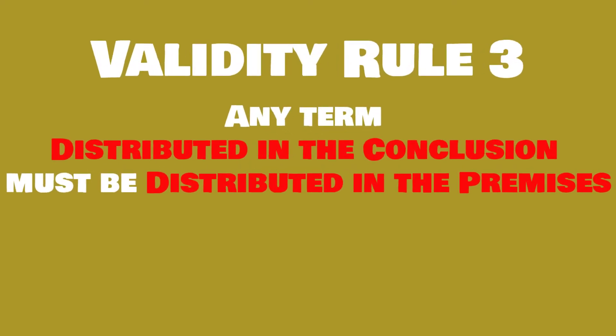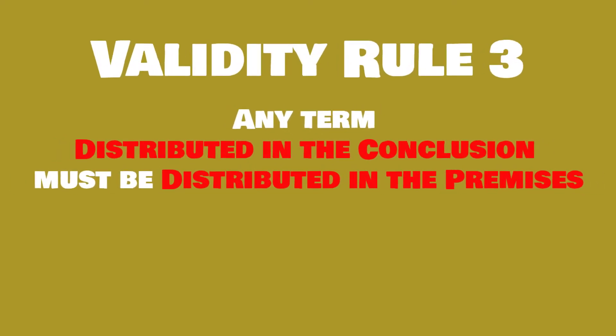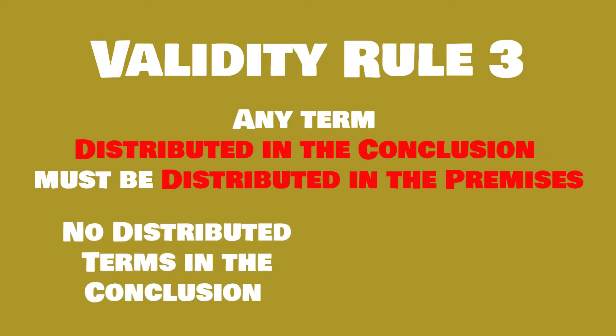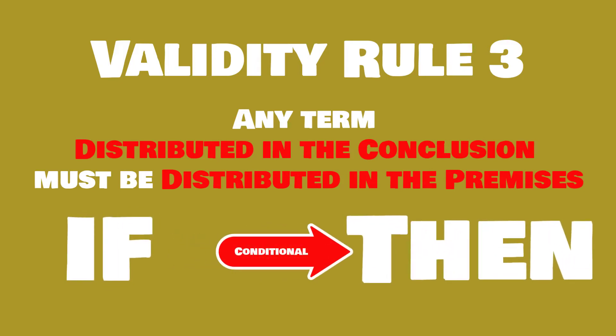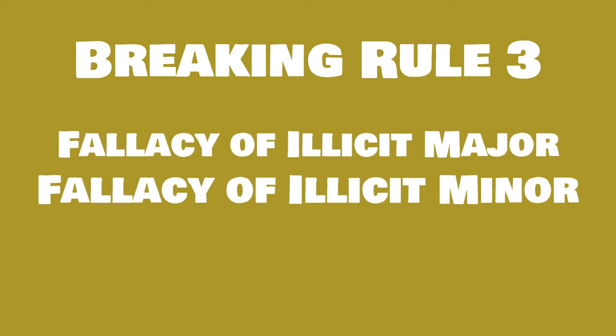Rule three: any term distributed in the conclusion must be distributed in the premises. If there are no distributed terms in the conclusion, that's fine — the rule only applies when there are. If this rule is violated, the argument commits either the fallacy of illicit major — if the major term is distributed in the conclusion but not in the premise — or the fallacy of illicit minor — if the minor term is distributed in the conclusion but not in the premise.